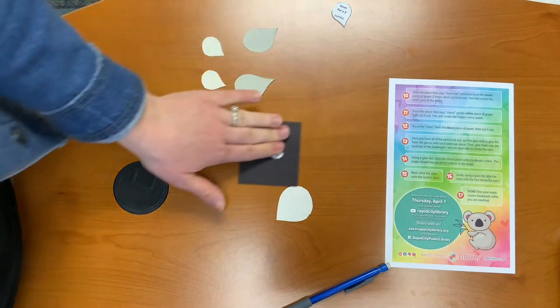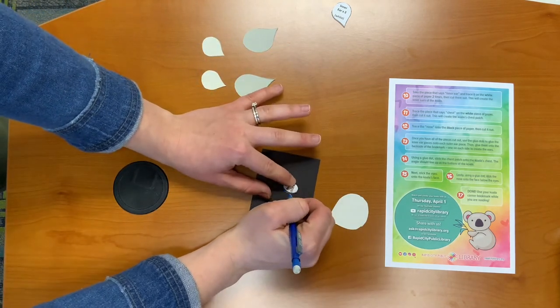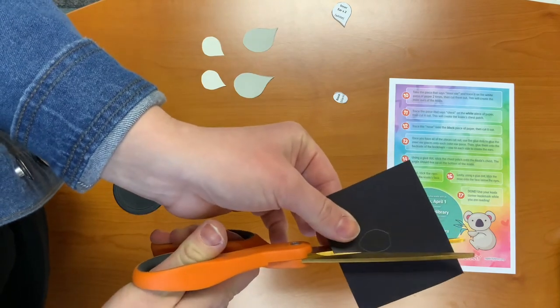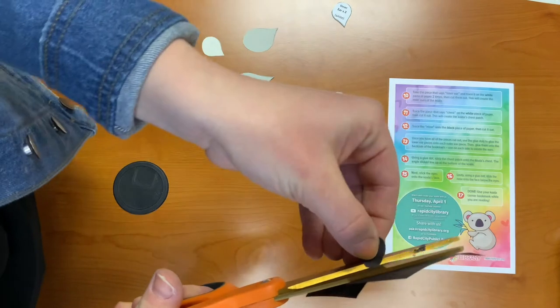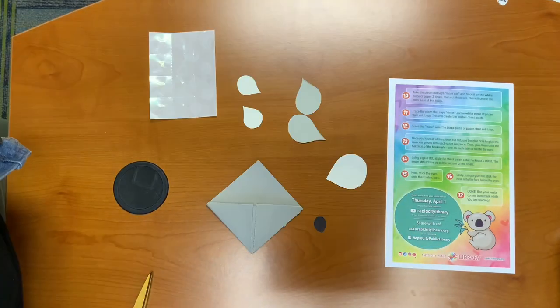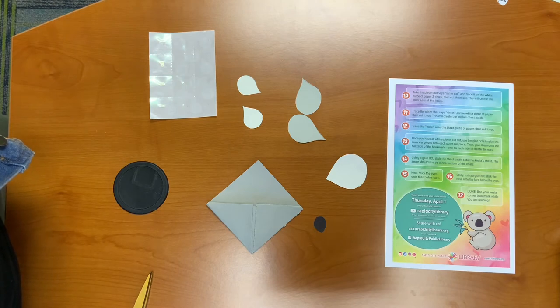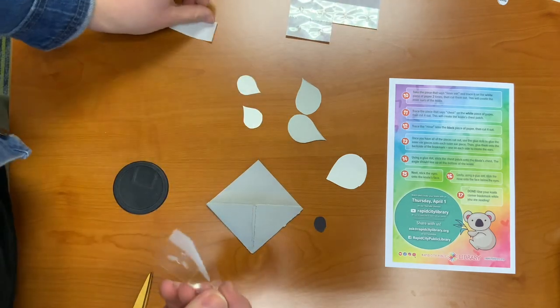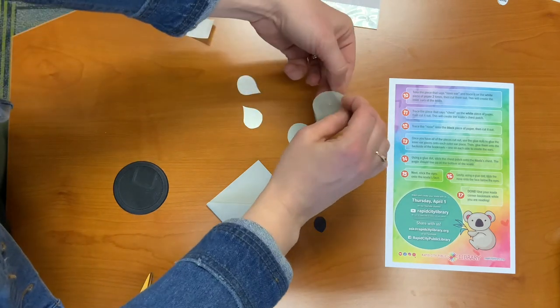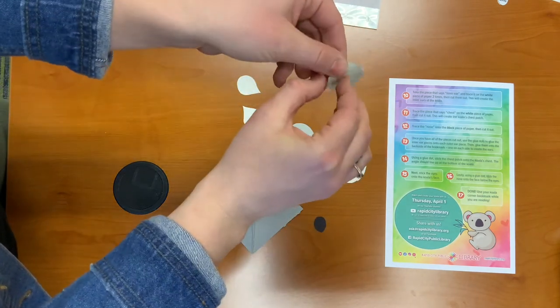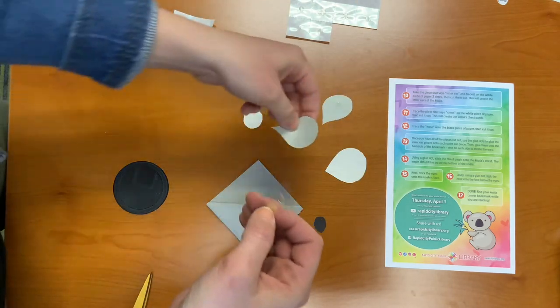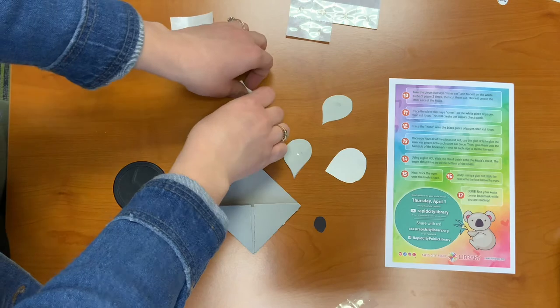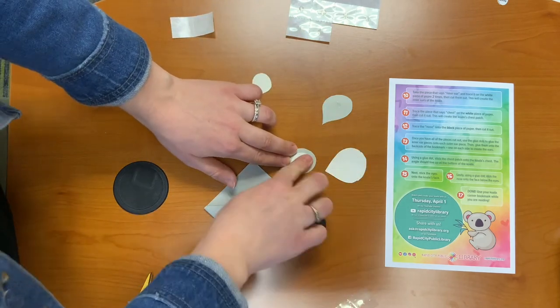Step twelve. Take the nose and trace it onto the black piece of paper. And then we're going to cut it out. Step thirteen. Once you have all the pieces cut out, use the glue dots to glue the inner ear pieces onto each outer ear piece. So we're going to take a glue dot for each. We're going to put one on each of the outer ears. And we're going to take these little pieces that fit inside and stick them on.